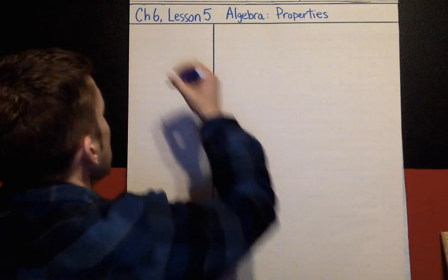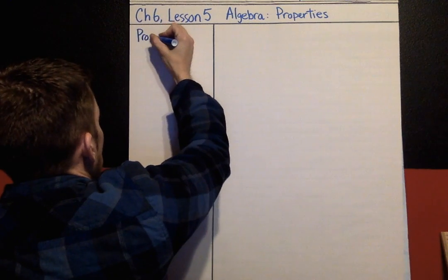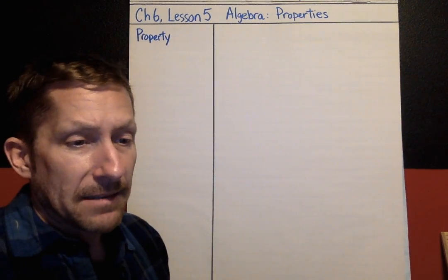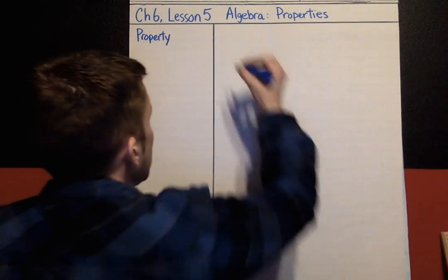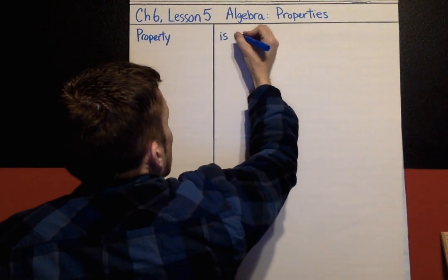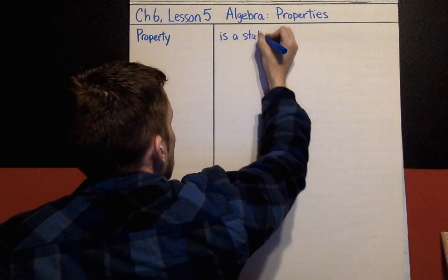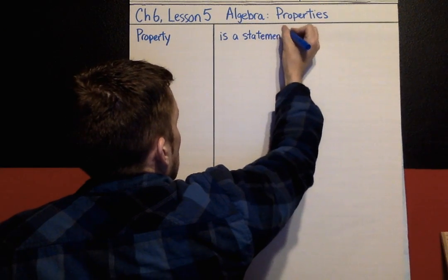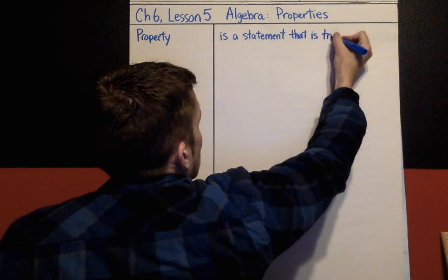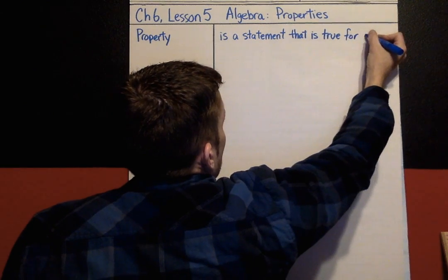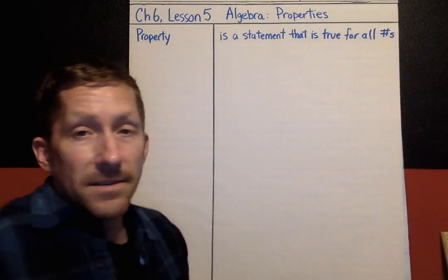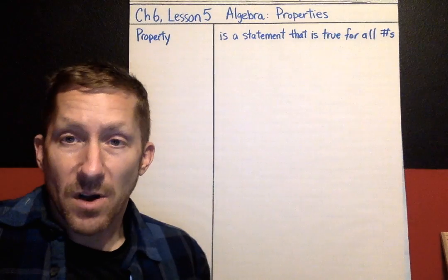In algebra, the word 'property' means it's kind of like a rule. A property is a statement that is true for all numbers.